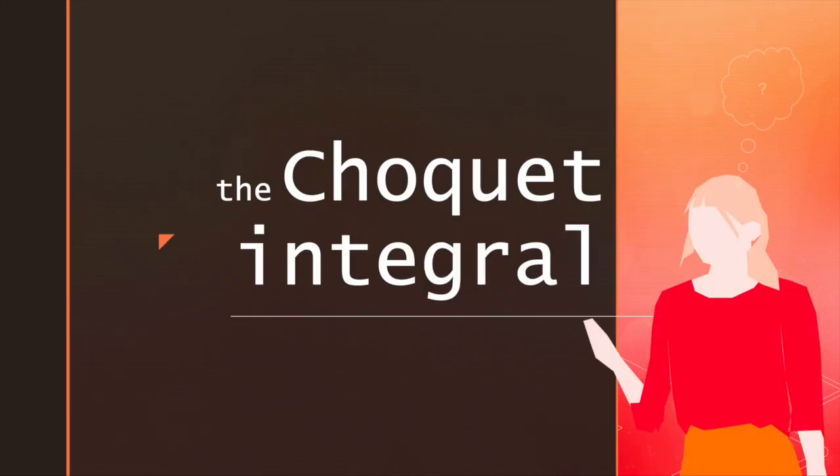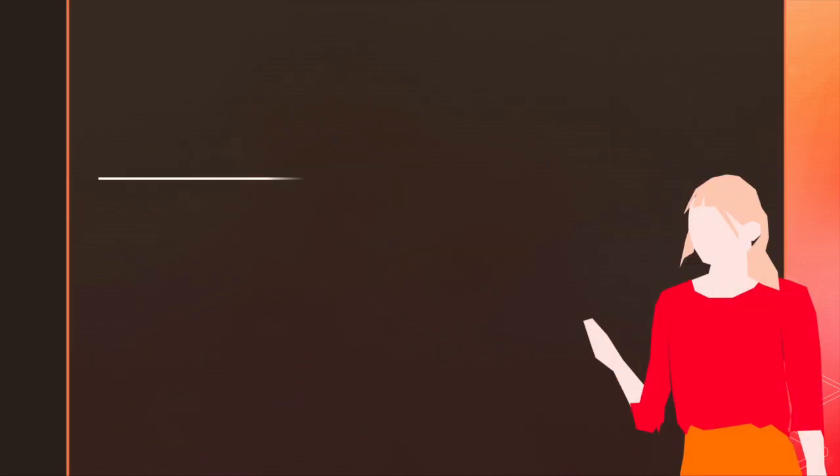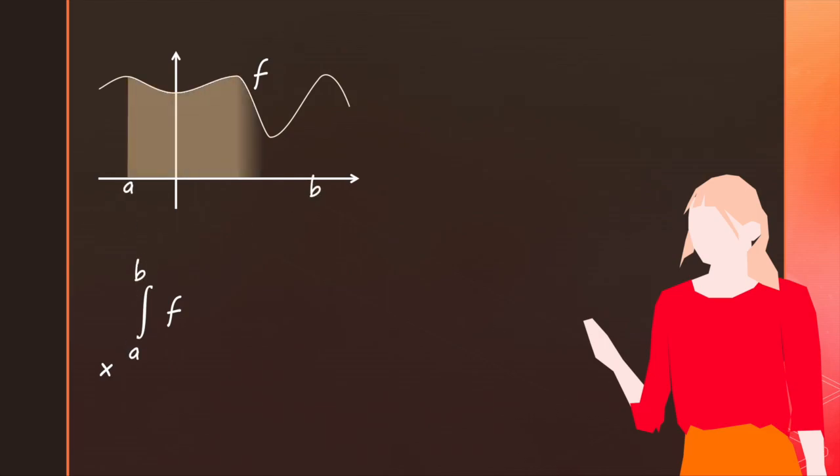Now let's go back to the Choquet integral. You might have an understanding of integrals as measuring the area below a functional curve, and that one way of calculating this is by looking at what happens when we approximate the area with rectangles, whose heights are the function values, and whose widths we set to get smaller and smaller. This process of breaking the function into vertical rectangles is what's known as the Riemann integral.